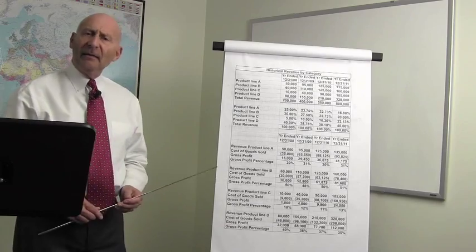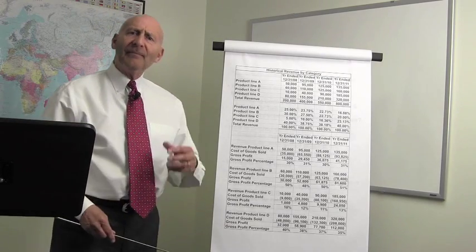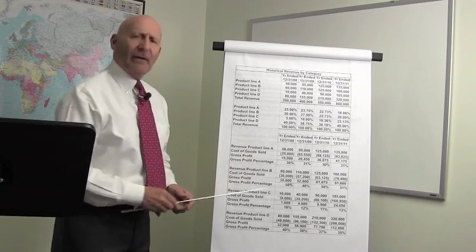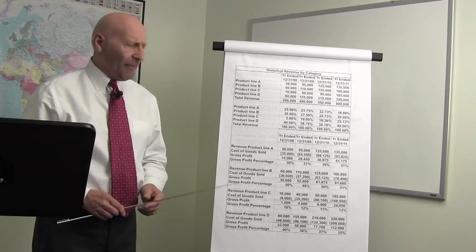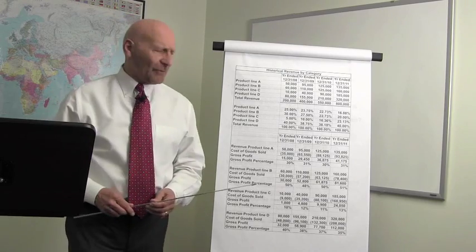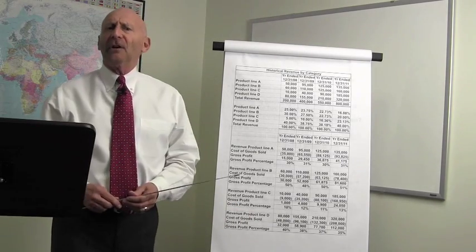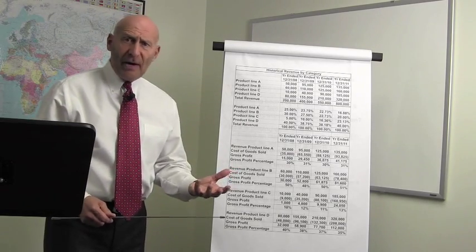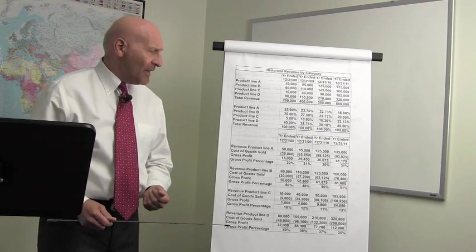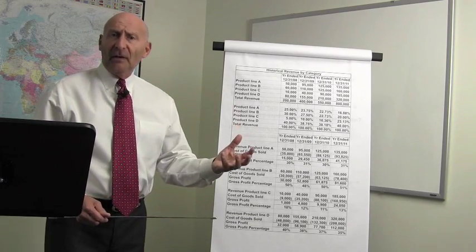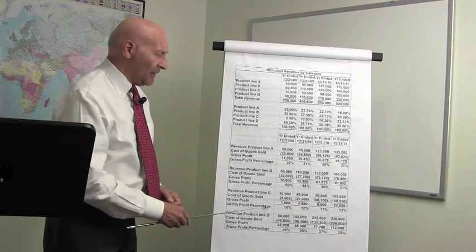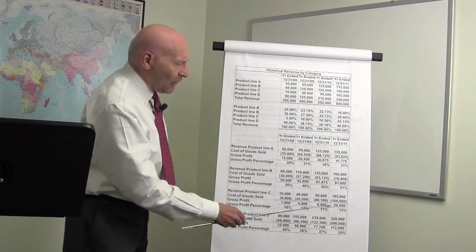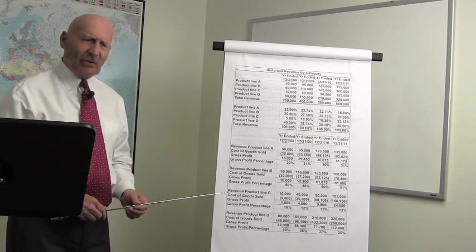No wonder that product line C has such large sales and contributes to a larger percentage of the revenue. Now, we would have to ask ourselves the question, why is the gross profit so low? Are we underselling, underpricing what that product should be? Is the gross profit percentage the standard for what the industry would really be? So, these are all questions that we would have to ask ourselves.